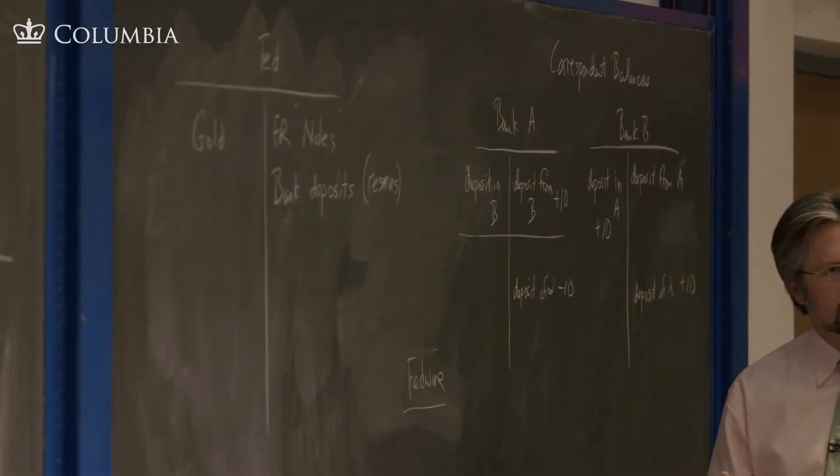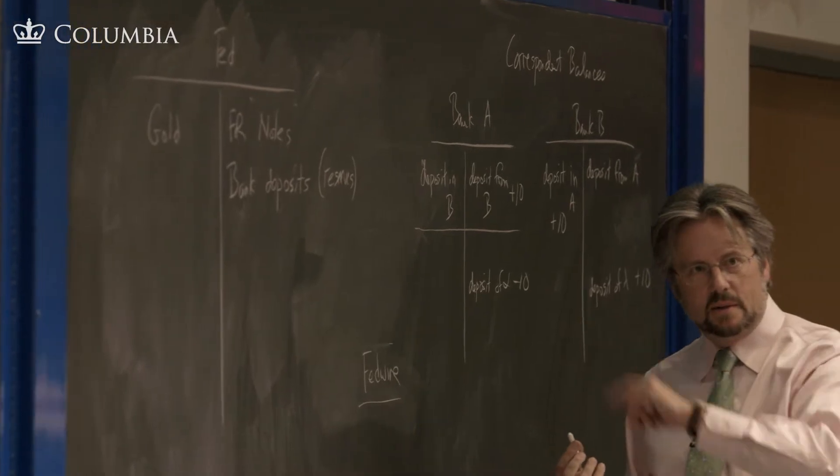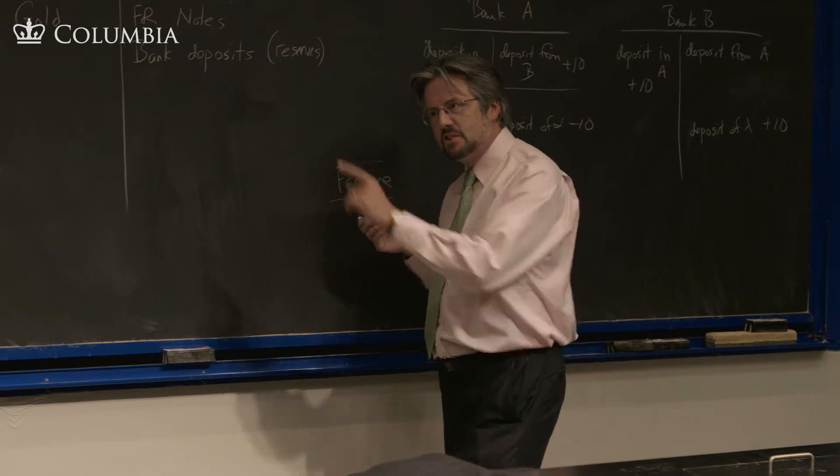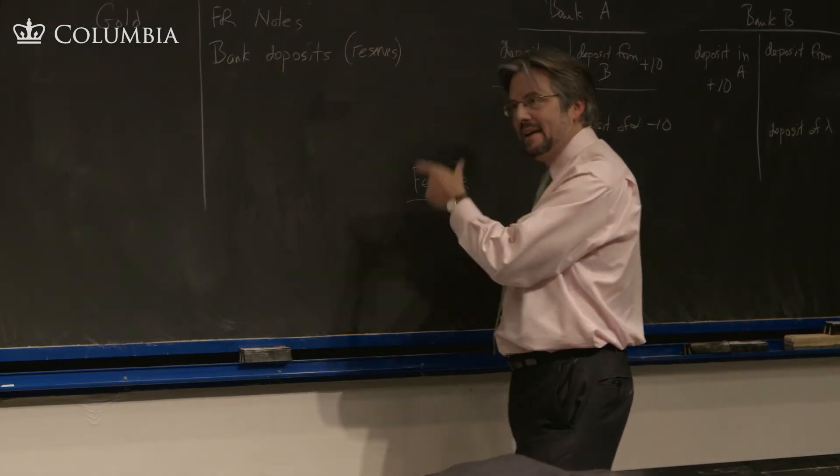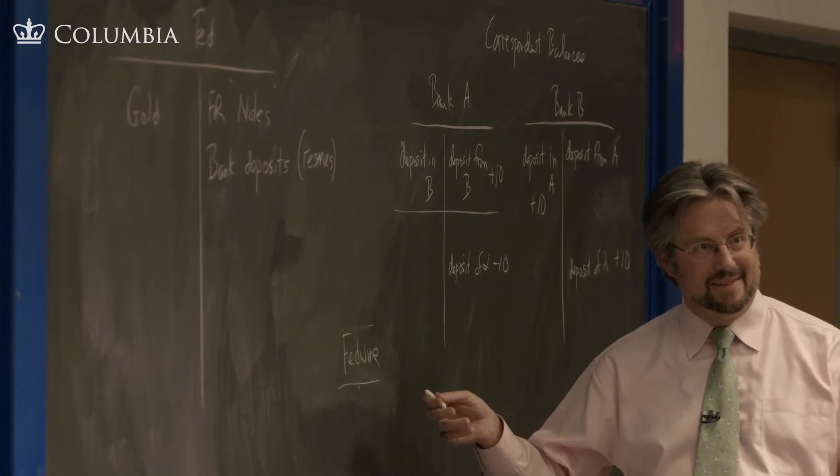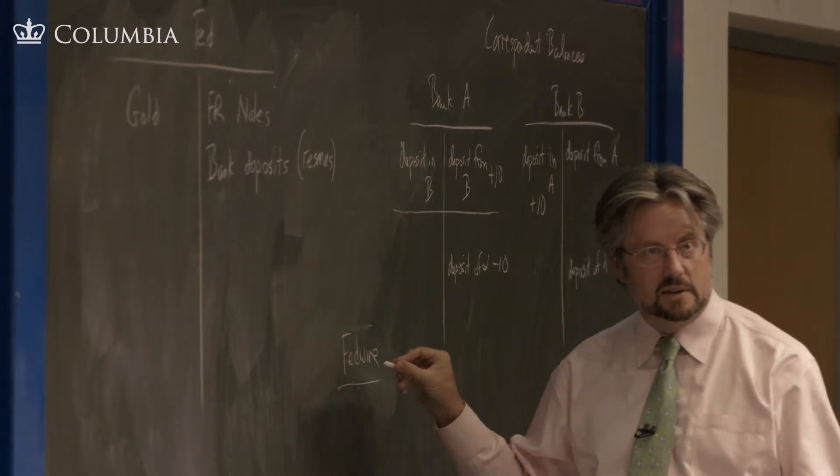So there are two clearing systems. One is private, completely private, and one is public Fedwire. What happens in the real world is the CHIPS clears first, and then Fedwire clears second. And Fedwire is real money. This is deposits at the Fed, the ultimate.